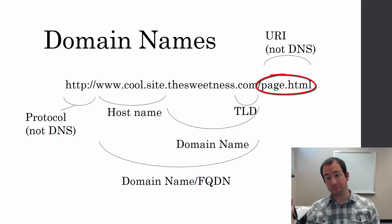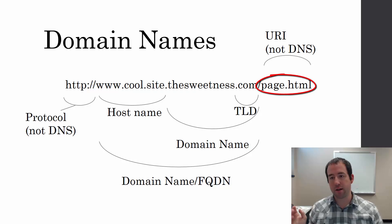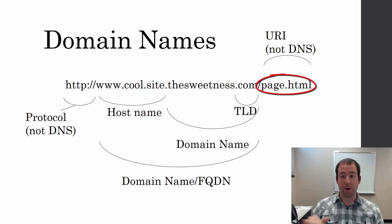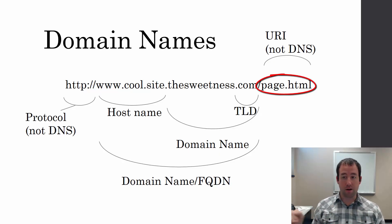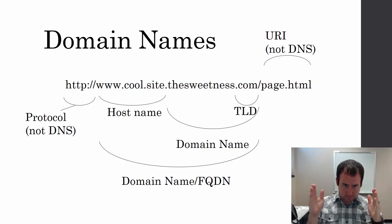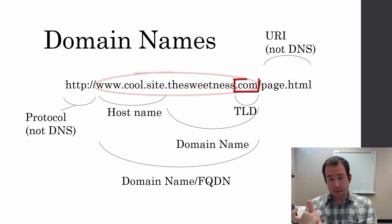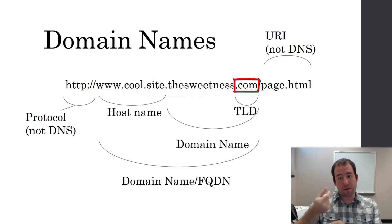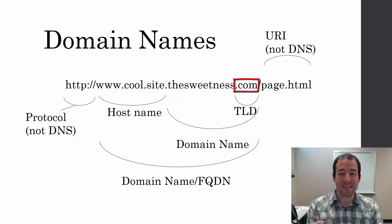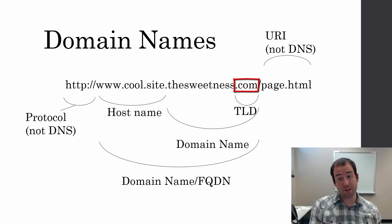At the end, after .com, there's a slash page.html — that is also not part of DNS. That's the URI, the Uniform Resource Identifier, and that is not part of DNS. DNS is everything in between those two. The .com is our top-level domain, and there's an invisible implicit dot after .com — it's implied, but you can actually type that dot and it won't break anything.